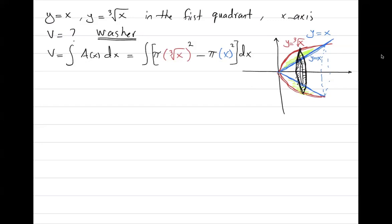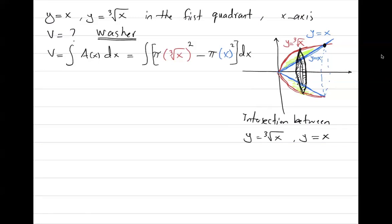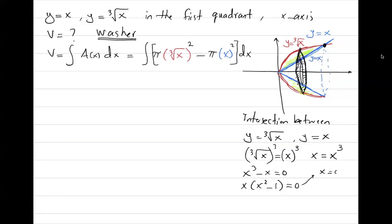For the bounds, we find the intersection between y equals x and y equals the third root of x. Setting them equal: x^(1/3) = x. Raising both sides to the third power gives x = x³, so x³ − x = 0. Factoring out x: x(x² − 1) = 0, giving intersections at x = 0, x = 1, and x = −1. Since we're in the first quadrant, we use x = 0 to x = 1.